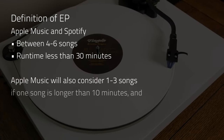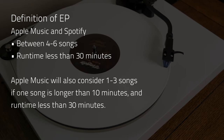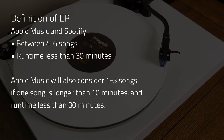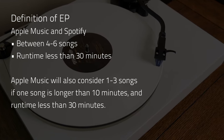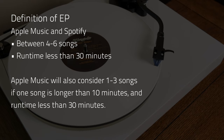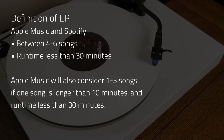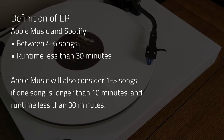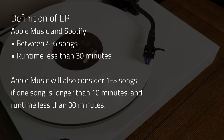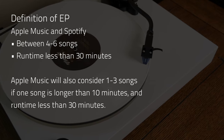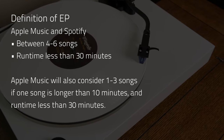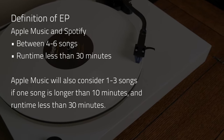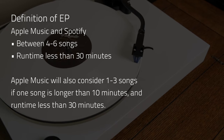Both Apple Music and Spotify use the criteria of 4 to 6 songs with a total runtime of under 30 minutes. Apple Music also considers a record an EP if there are 1 to 3 songs with 1 song longer than 10 minutes and a total runtime of less than 30 minutes.